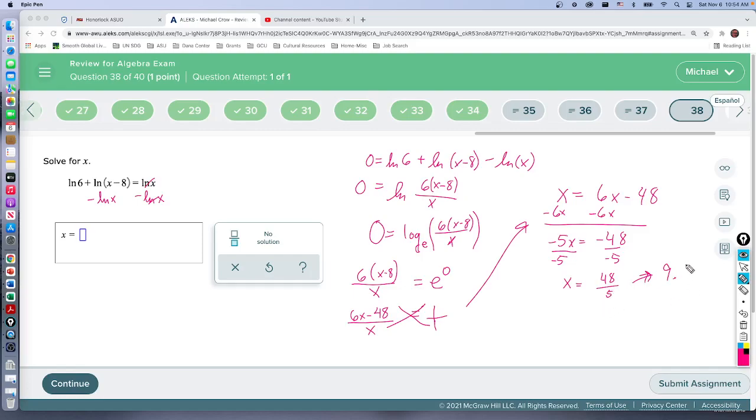So if I take 9.6 and subtract eight, I'm still positive. I've got 1.6, so that's okay. Remember, in logarithms you cannot have a negative input. So we're okay with 9.6. Nine point six works—it'll be our solution.